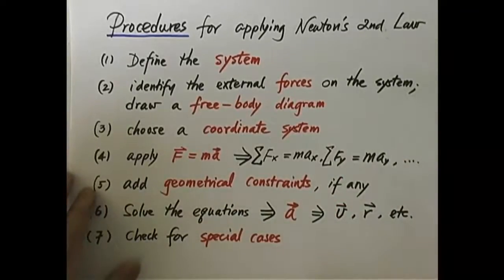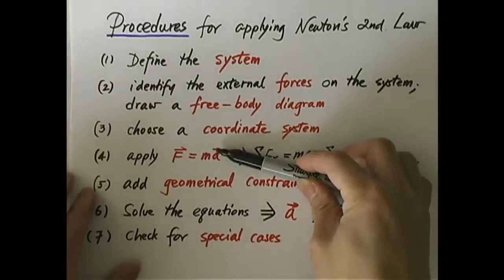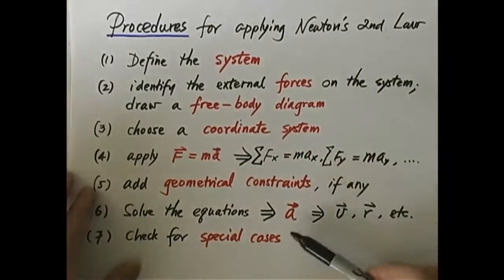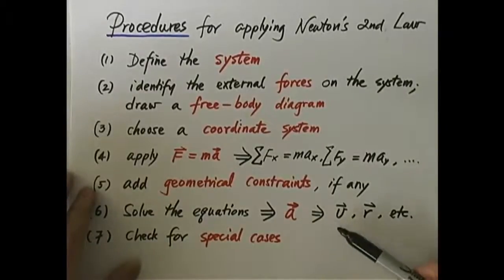Now, when you combine the dynamical equations and the geometrical constraints, there should be enough equations for you to solve for the acceleration. Isn't that what we want to do? We want to solve the acceleration. And once you get the acceleration, you can find v and r and everything, whatever you want. And the problem is essentially solved.